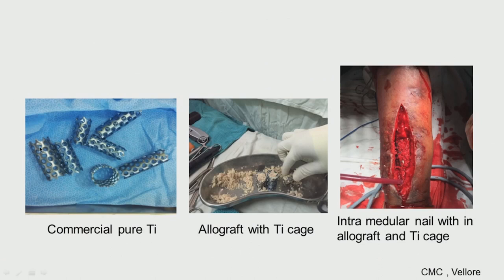For example, titanium cages made of pure titanium are used in segmental bone defects. They have less weight compared to a solid piece, and you can fill them up with allografts — bone fillings from the same patient — and place them in the defect. This approach is used when the gap between the bones is too large, called a long segment bone defect.